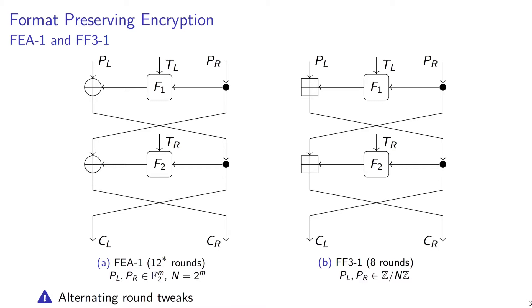This integer n is such that n squared is the domain size. The most important thing about both of these ciphers is that the tweak can be split into two parts — which I'll call the left and right parts, dl and dr — so that these are used in an alternating way. For example, all the odd rounds might use the left half of the tweak and all the even rounds the right half. This is actually the property that enables these attacks.